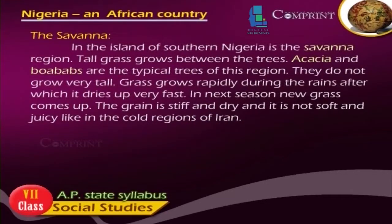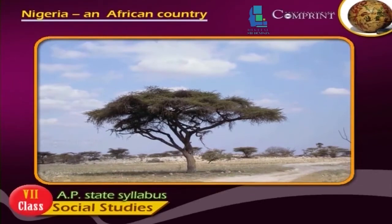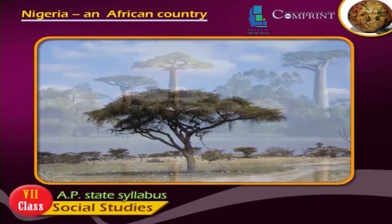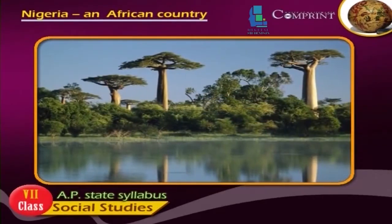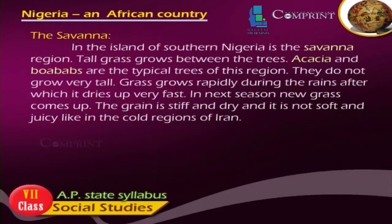The Savannah. In the interior of southern Nigeria is the Savannah region. Tall grass grows between the trees. Acacia and Baobab are the typical trees of this region and they do not grow very tall. Grass grows rapidly during the rains, after which it dries up very fast. In the next season, new grass comes up. The grass is stiff and dry, and it is not soft and juicy like in the cold regions.